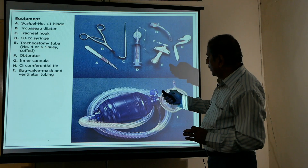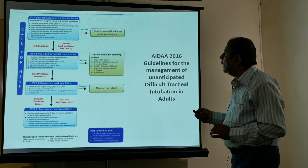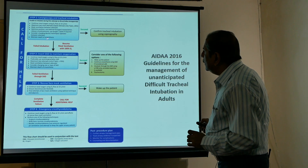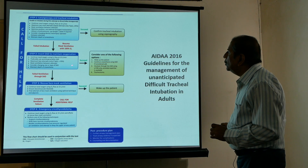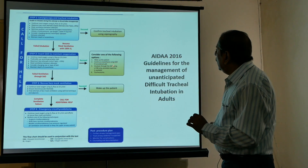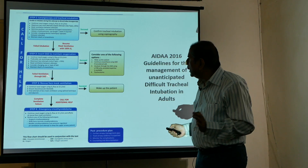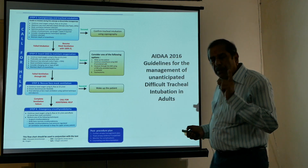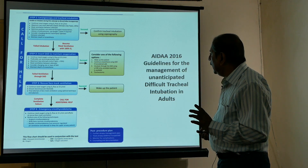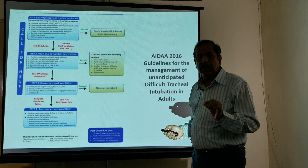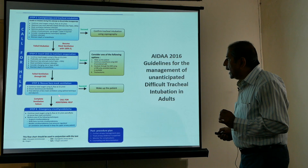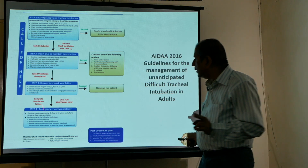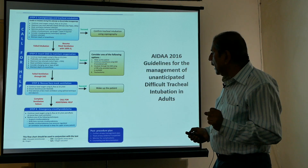When you proceed for laryngoscopy and tracheal intubation — if successful, attach capnography. If you fail, insert a supraglottic airway device. If that also fails, the maximum attempts allowed are two. Since the patient is not breathing and brain desaturation occurs quickly, within three minutes you must trigger and declare emergency cricothyroidotomy and proceed ahead.